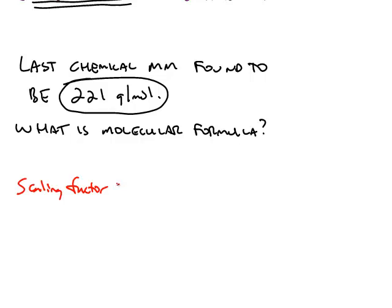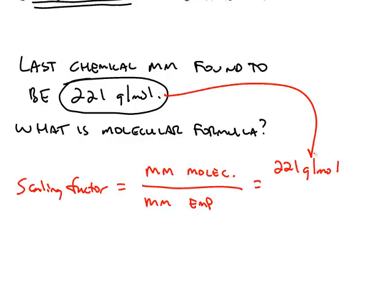You find the scaling factor by dividing the molar mass of the molecular formula by the molar mass of the empirical formula. 221 grams per mole is the molar mass of the true substance. And the empirical formula was C3H8.